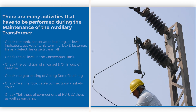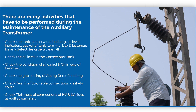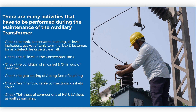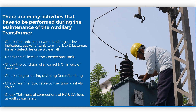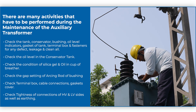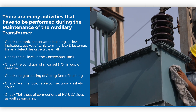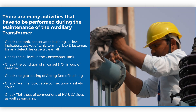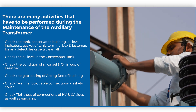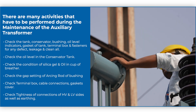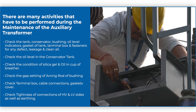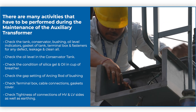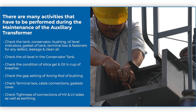There are many activities to be performed during the maintenance of the auxiliary transformer. Check the tank, conservator, bushing, oil level indicators, gasket of tank, terminal box, and fasteners for any defect, leakage, and clean all.